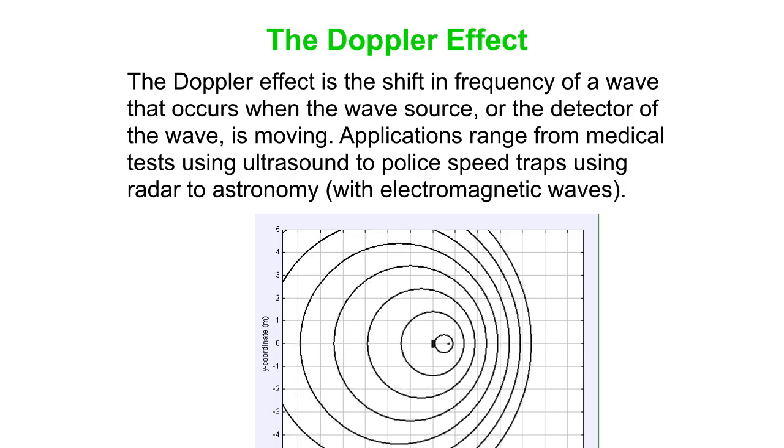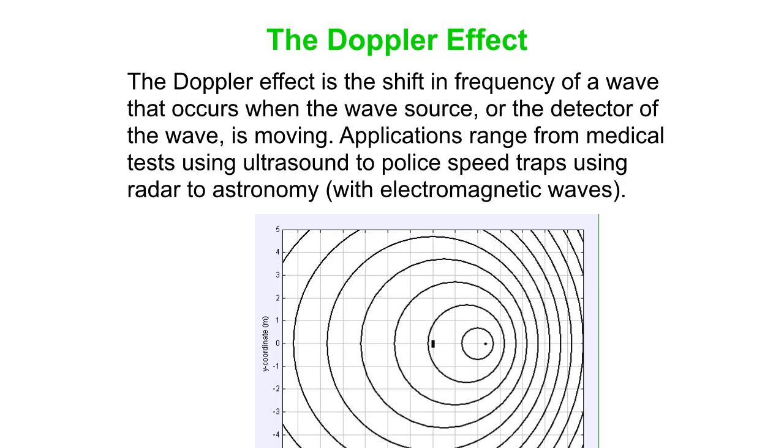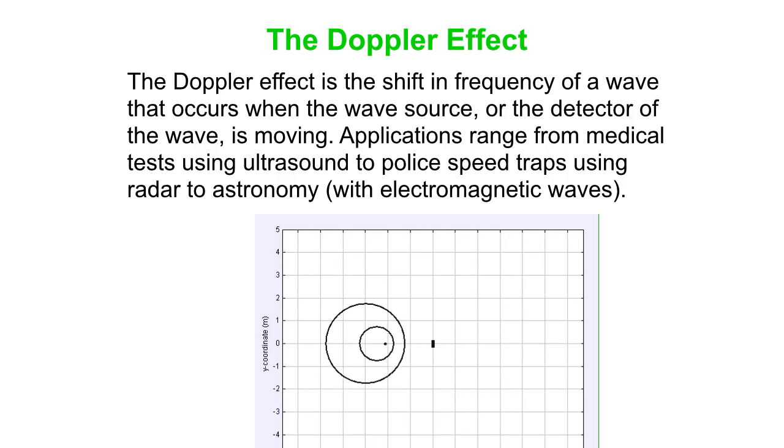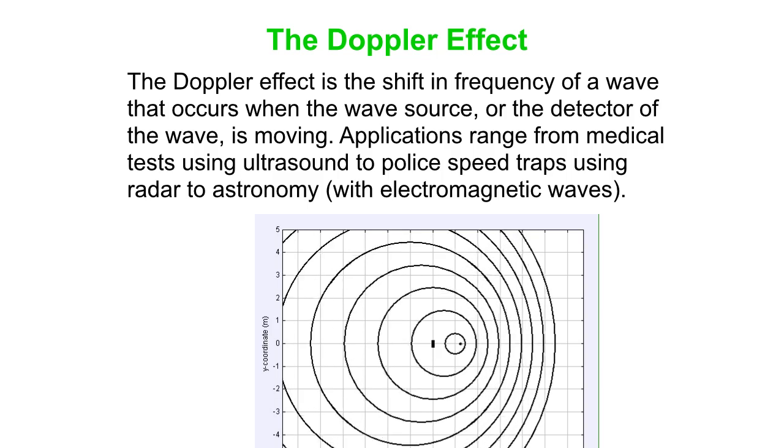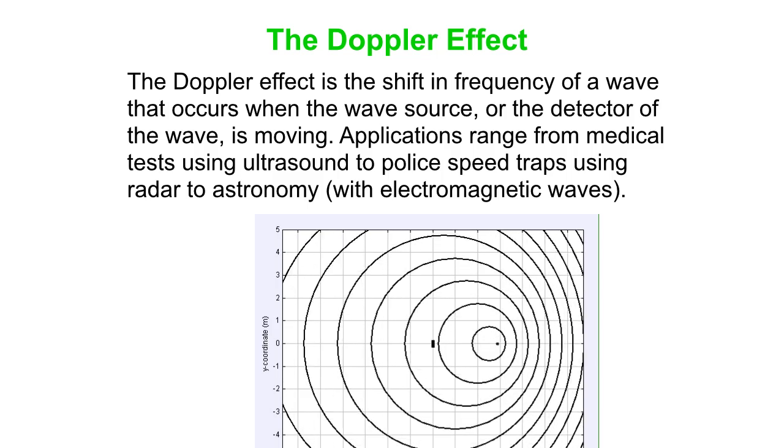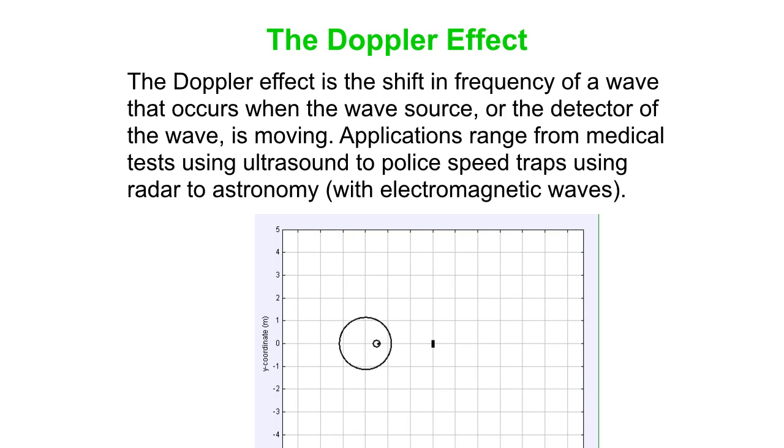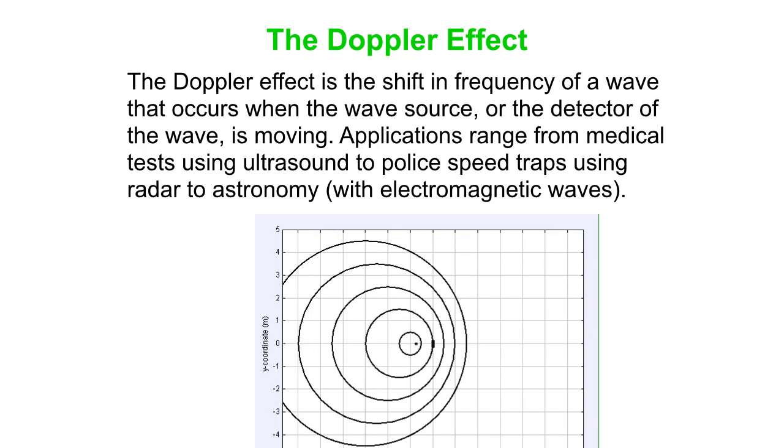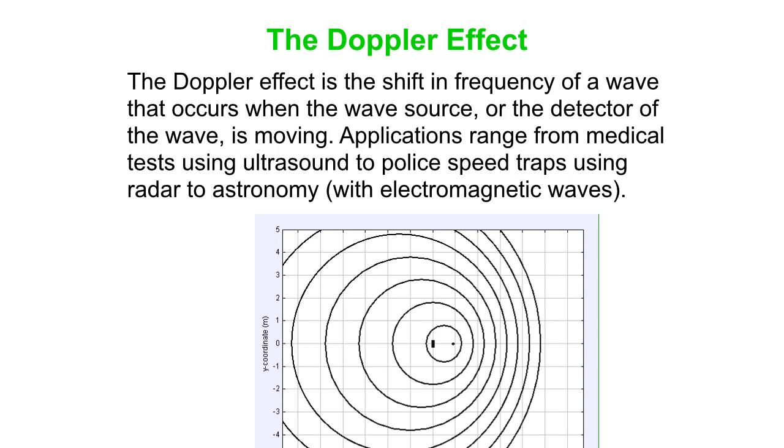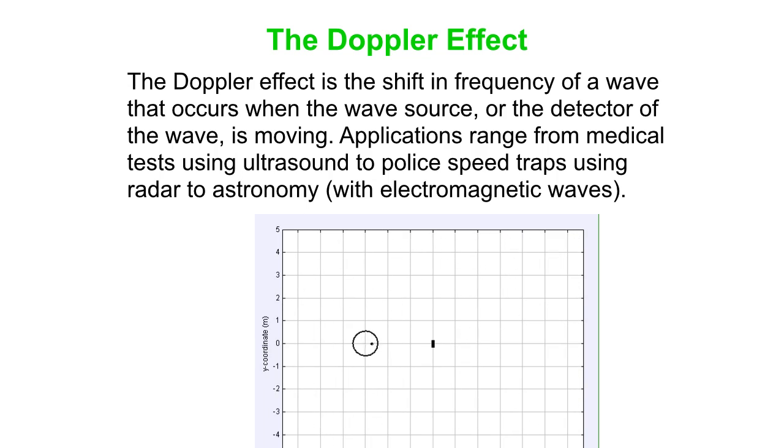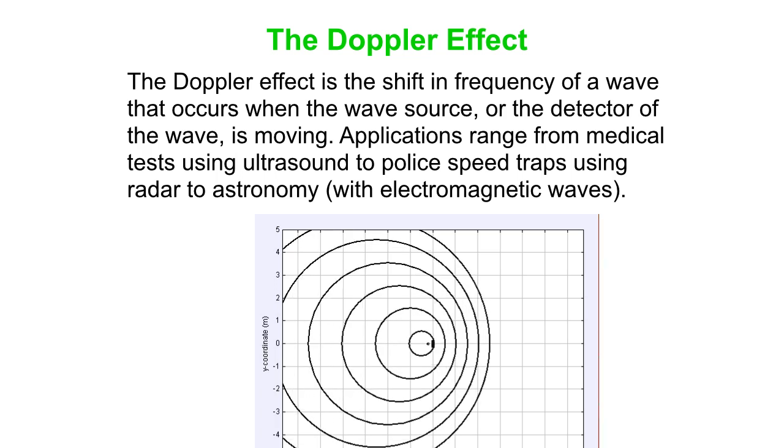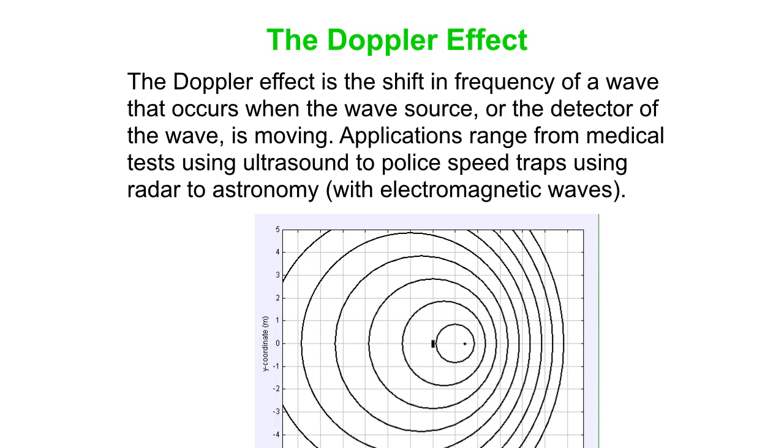Lots of applications. You can do medical tests using ultrasound. You can do Doppler studies of the heart, for instance. The police can catch you speeding. And there's lots of astronomical applications. And the astronomical ones, and even the police radar, often use electromagnetic waves. Note that electromagnetic waves work a little bit differently than the Doppler Effect does for sound waves. And we'll be focusing on sound waves.